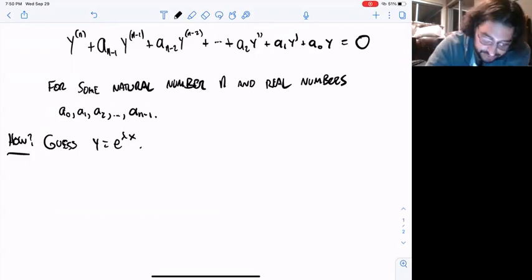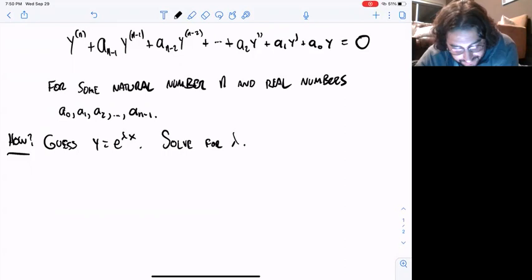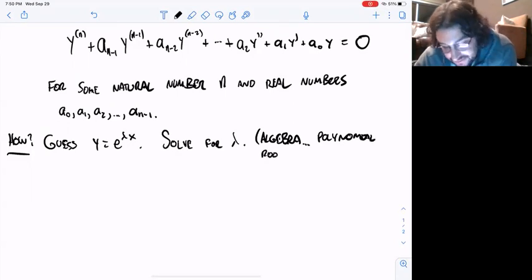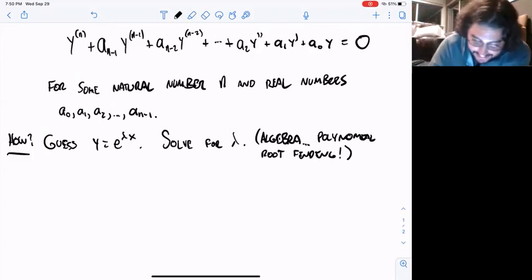Once you do that, after you plug in that guess, it's all good old algebra—polynomial factoring or not necessarily, but root finding. Maybe quadratic formula if it's degree two. That's polynomial root finding that'll find lambda for you. Then, how do you build solutions based on these lambdas?